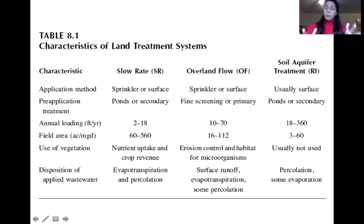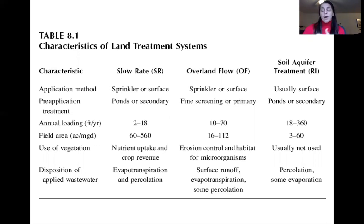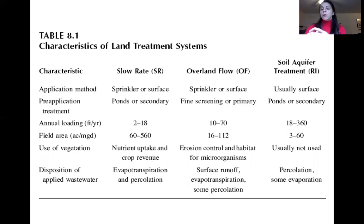The three systems we're covering: slow rate uses sprinkler or surface application with primary or even secondary treatment pre-treatment; overland flow can handle slightly higher nutrients with just screening or primary treatment; and soil aquifer treatment often uses ponds or secondary treatment. Annual loading rate goes from low to high — slow rate, overland flow, soil aquifer — while the land area required decreases in that same order.